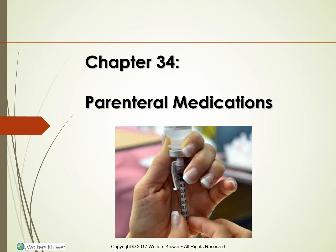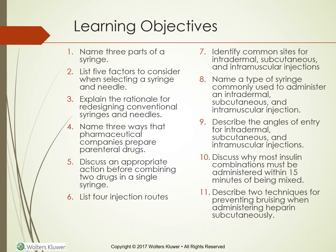Learning objectives for parenteral medications: name three parts of a syringe, list five factors to consider when selecting a syringe and needle, explain the rationale for redesigning conventional syringes and needles, and name three ways that pharmaceutical companies prepare parenteral drugs. Discuss inappropriate actions before combining two drugs in a single syringe.